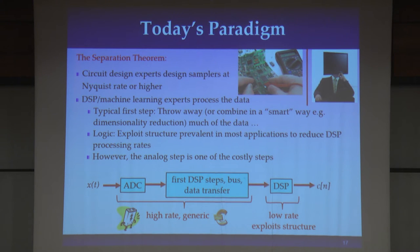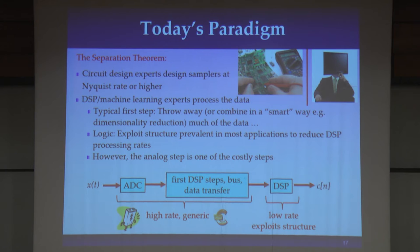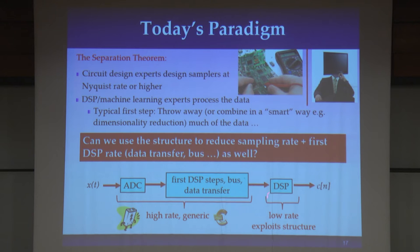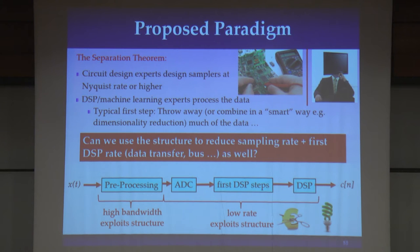Typically, the first thing we do when we get all this data is we throw it away — in some smart method. In machine learning this is called dimensionality reduction; in signal processing, feature extraction. But all of these are fancy words for saying we don't actually need all of this data for our task. What's happening is that our ADC and first DSP steps — the costly part — are being done at the high rate, while in the digital domain we exploit structure and reduce the rate. We'd like to use the same structure all the way in the front end to save power, energy, and costs.